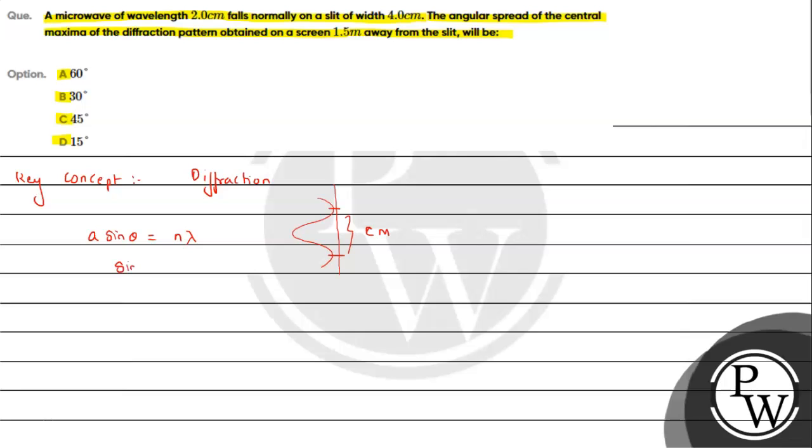λ/a, which is 2×10⁻² divided by 4×10⁻², which equals 1/2. Therefore, θ = 30 degrees.